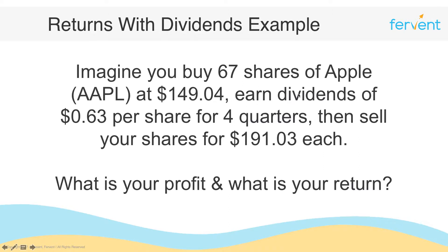In case you're not familiar with dividends: dividends are a share of the profit that investors can receive. When you buy shares in a company, you technically own part of that company, which entitles you to earn dividends — a portion of the company's profit paid out to you. In this example, you earn dividends of $0.63 for every share you own. You own 67 shares, so you get 67 times $0.63 as total dividends, earned every quarter for four quarters — that is, $0.63 four times a year.